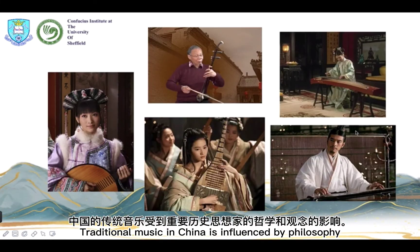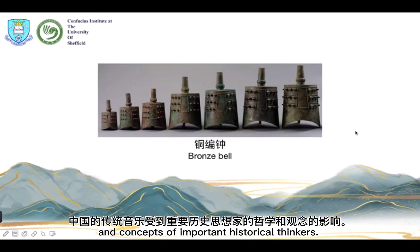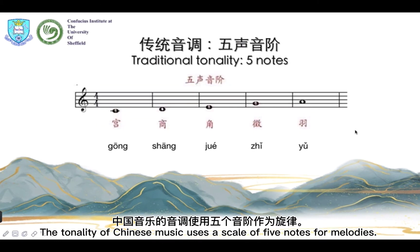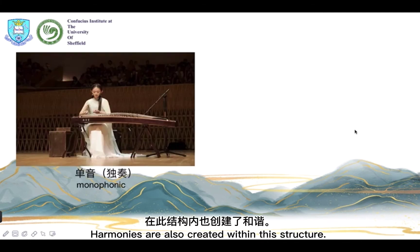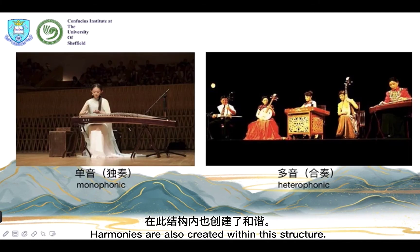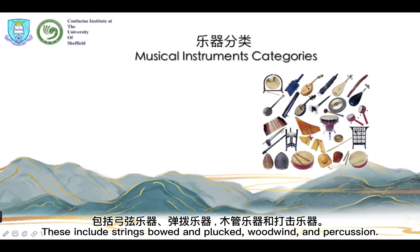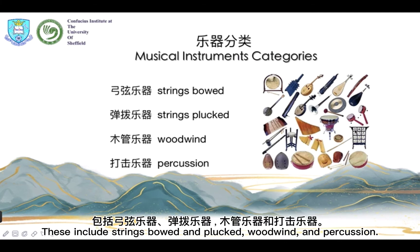Traditional music in China is influenced by philosophy and concepts of important historical thinkers. The tonality of Chinese music uses a scale of 5 notes for melodies, and harmonies are also created within the structure. The musical instruments are categorized according to the materials from which they are made, including strings bowed and plucked, woodwind and percussion.